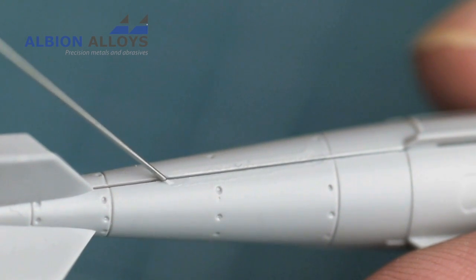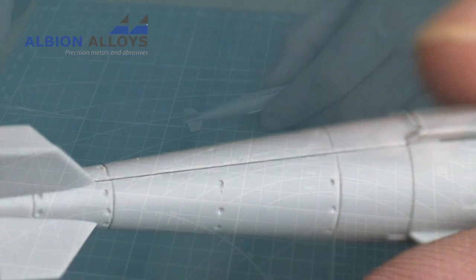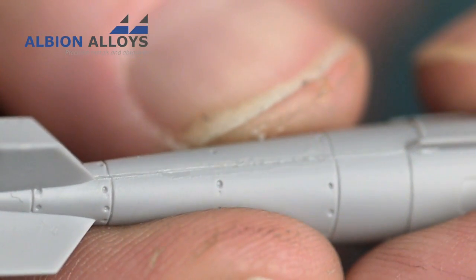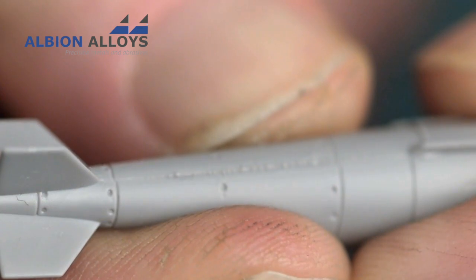Put the two pieces of the kit together and draw the needle over the seam. Capillary action draws the solvent into the seam and a slight squeeze on the part creates a really strong bond.